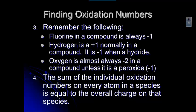The last rule is that the sum of all the oxidation numbers for each of the atoms in a species — so that would be a compound or an ion — is going to equal the overall charge of that thing. So if it's a compound, a compound is neutral, so the numbers added together would equal zero.